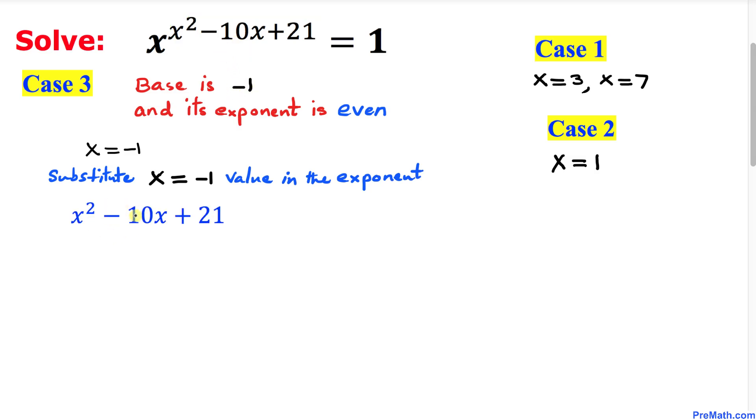Here I have copied down our exponent and now let's go ahead and replace x by negative 1. So this is going to become negative 1 square minus 10 times negative 1 plus 21. Let's go ahead and simplify: negative 1 square is going to give us positive 1, negative 10 times negative 1 is going to give positive 10 and then plus 21.